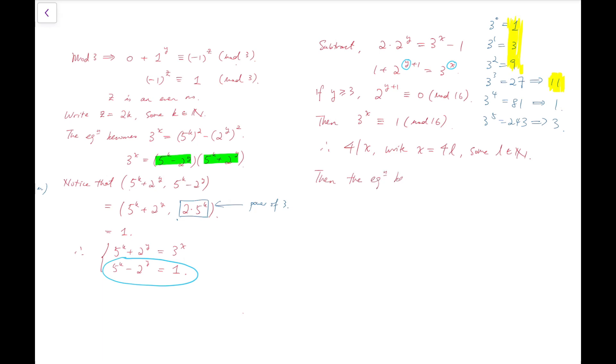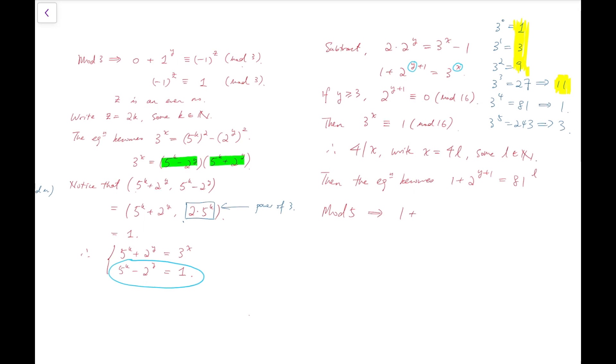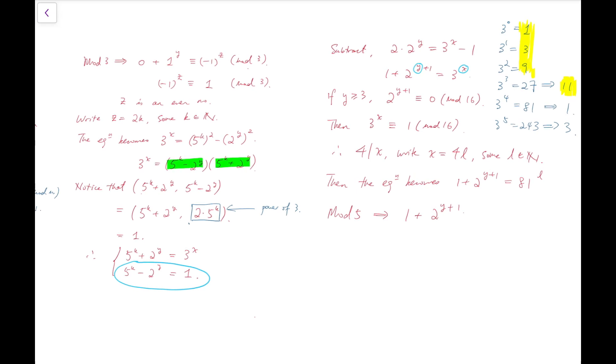Then the equation becomes 1 plus 2 to the y plus 1 is equal to 81 to the power of L because 3 to the 4 is equal to 81. However, at this point we can take mod 5 from both sides. Then 1 is still 1, and 2 to the y plus 1, now the right hand side is equal to 1 to the power of L which is 1 mod 5. So that means 2 to the y plus 1 is congruent to 0 mod 5, but that's absurd because powers of 2 are never multiples of 5. So we have a contradiction here. Now the reason that we have a contradiction is that we have made a wrong assumption here which is that we have assumed y to be at least 3. So that means therefore y is at most 2.